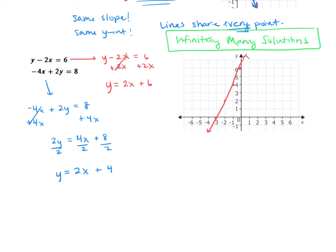We have y equals 2x plus 4. So let's just take note of a couple things. Our first equation was y equals 2x plus 6. Our second equation is y equals 2x plus 4. Well, these two lines have the same slope of positive 2, but this time they have different y-intercepts.